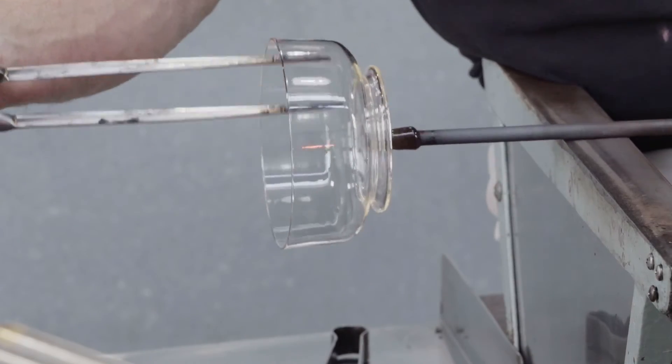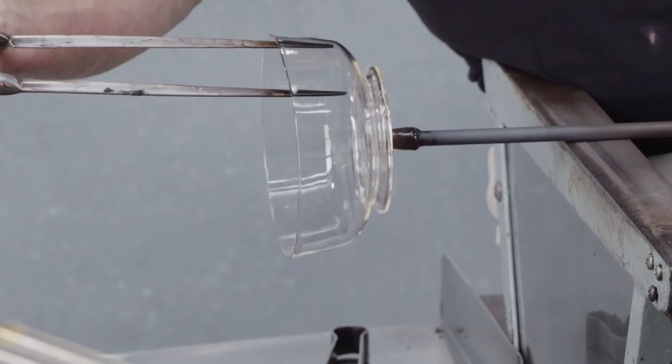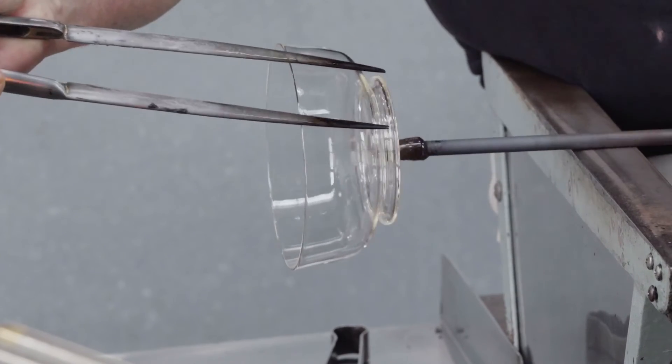The radius of the bottom edge is set, and finally the sides are given their slight conical shape.